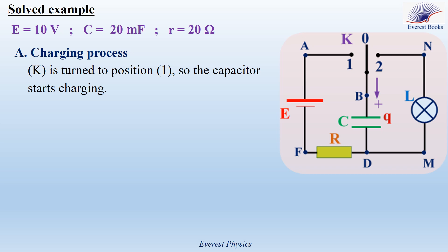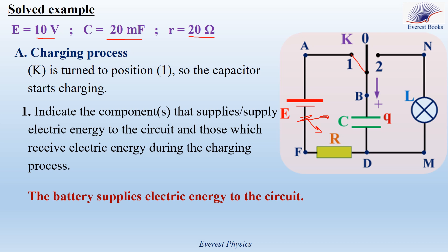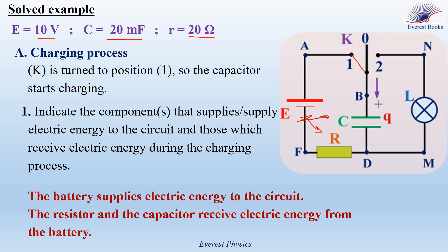Let's solve an example about the energy of the capacitor. In this circuit we have an ideal battery of electromotive force 10 volts, an ohmic resistor of resistance R, an uncharged capacitor of capacitance 20 millifarads, an SPDT switch K, a lamp considered as an ohmic resistor of resistance 20 ohms, and connecting wires. For the charging process, K is turned to position one so the capacitor starts charging. Indicate the components that supply electric energy to the circuit and those that receive electric energy during the charging process. The battery supplies energy to the resistor and to the capacitor; therefore, the battery supplies electric energy to the circuit, and the resistor and capacitor receive electric energy from the battery.